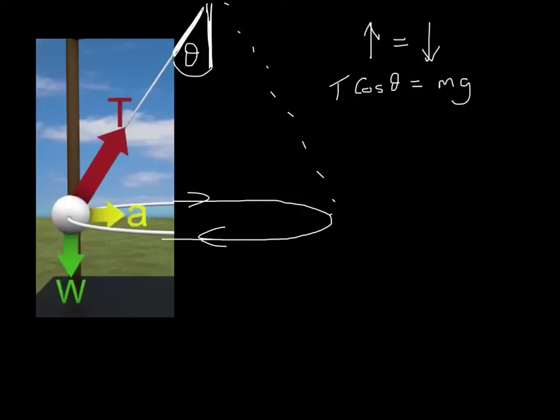Now we can write an equation for that and say that T cos theta is going to equal mg. And that's really like applying Newton's first law. There's vertical equilibrium, therefore the upward and downward forces must be in balance.